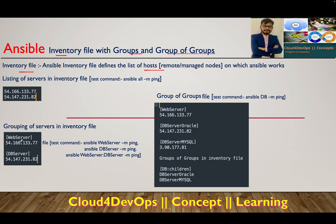Create a group of web servers, place all web servers into that group. Then create a group of database servers. For example, if I just need to interact with the application server, I can call all application or web servers and do the deployment. Next day, if I have to update the database component, I call the database group. If I have to deal with both at the same time, I write a playbook where the web server gets the web deployment package and the database server gets the DB component updated.